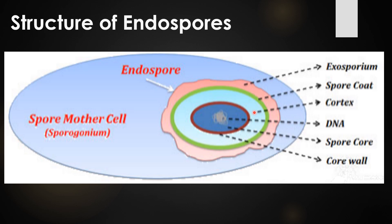The innermost layer of the spore is called the spore wall or core wall. This core wall covers the central protoplast or core of the endospores. The endospore core has normal cell structure similar to vegetative cells. Inside the core, DNA — the basic and very important component — is present within the core wall. The core wall also contains ribosomes along with the DNA.